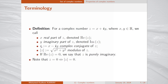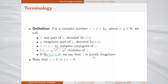We denote by z-bar the complex number x minus iy and call it the complex conjugate of z. We denote by |z| the square root of x squared plus y squared and call it the modulus of z. Finally, if the real part of z equals zero, we say that z is purely imaginary.